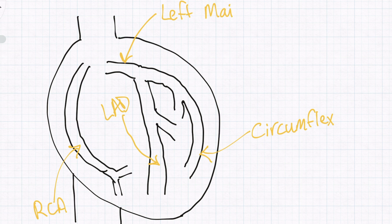The LAD is one of three main coronary arteries responsible for supplying blood to the heart muscle. The three main coronary arteries include the LAD, which comes down the front of the heart shown here,